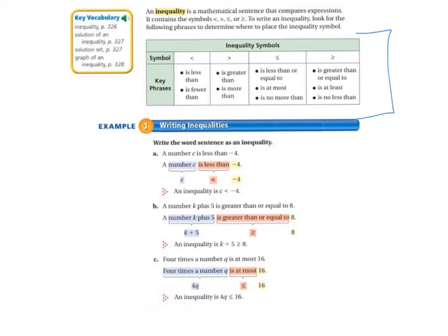Example 1, Writing Inequalities. Write the word sentence as an inequality. A number C is less than negative 4. So we would write C, the less than symbol, negative 4. So that would look like C less than negative 4.